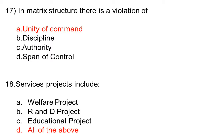In matrix structure, there is a violation of: option A unity of command, option B discipline, option C authority, option D span of control. The correct answer is option A, unity of command.